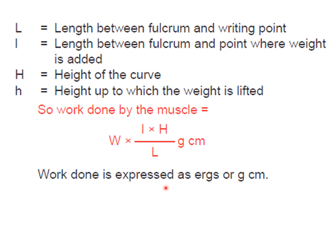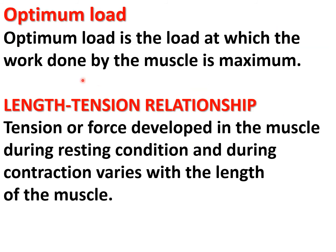Work done by the muscle = W × l × H / L, expressed in ergs or gram centimeters. Optimum load is the load at which the work done by the muscle is maximum.